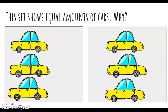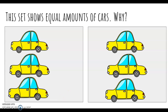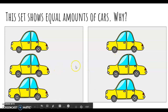Alright, so this set shows equal amounts of cars. So why can we say that both sets of cars are equal? If you say because they have the same number or they have the same amount, you are correct. Both sets of cars are equal because one, two, three — one, two, three. Good job, awesome. Let's go to the next one.